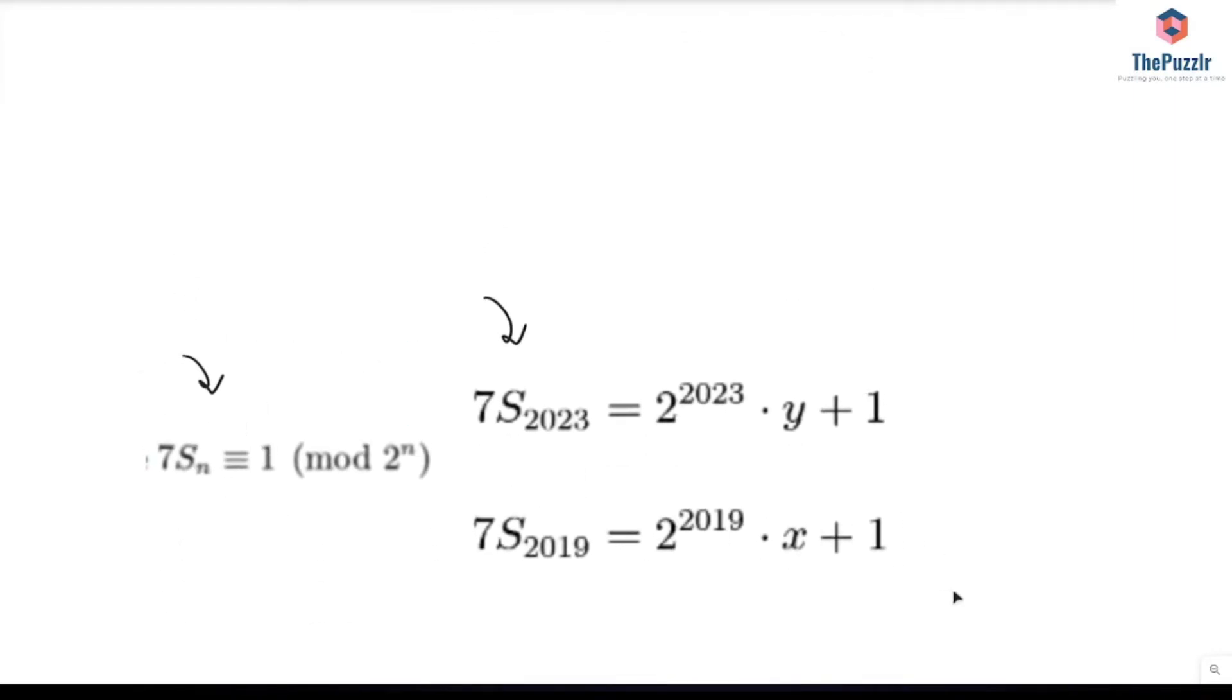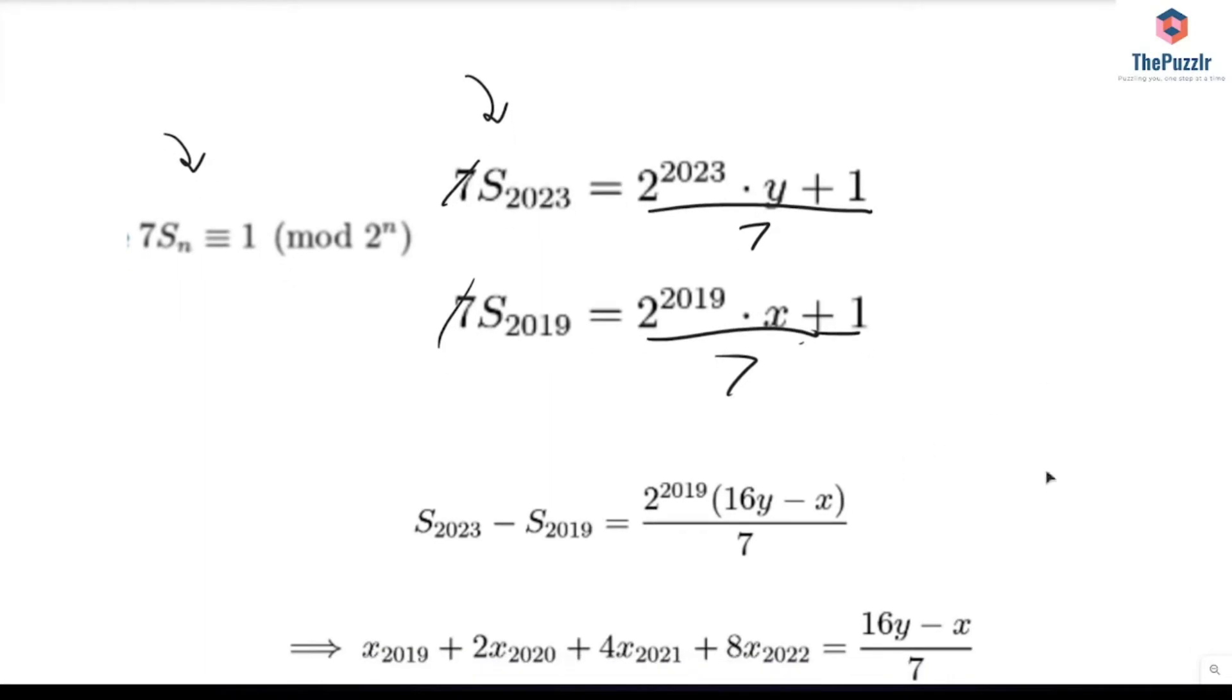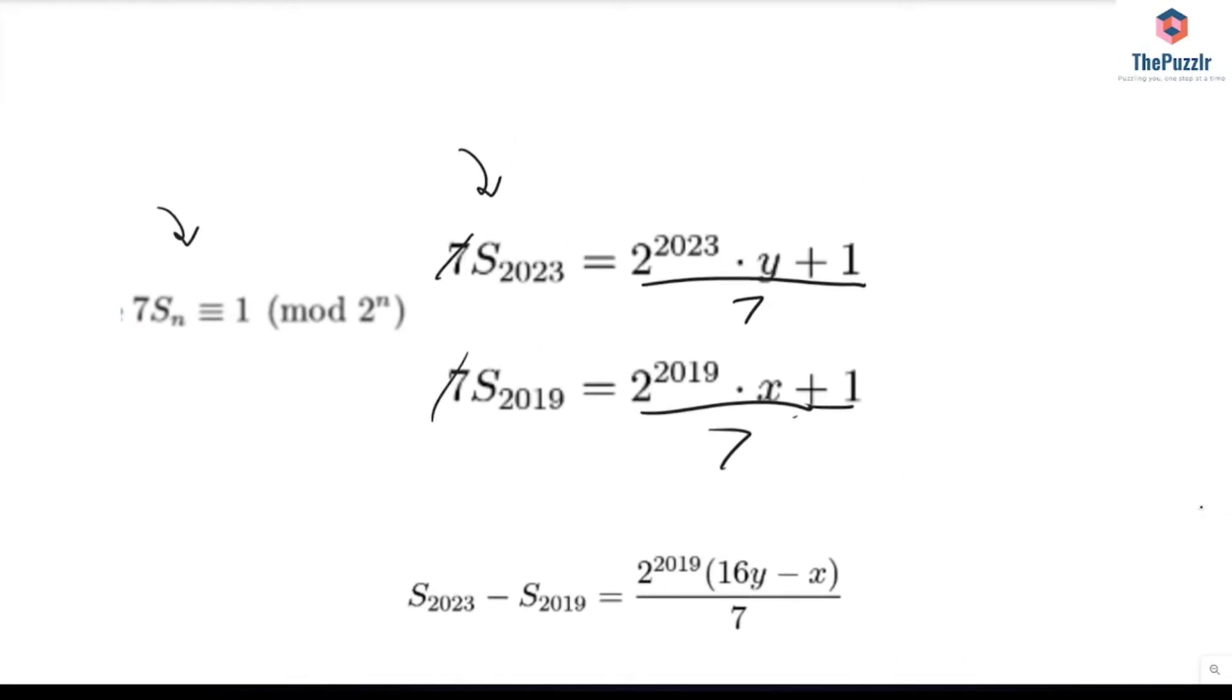Now that we have this, we have two expressions for S of 2023 and S of 2019 because we can take this and divide both sides by 7. If we take the difference between them, S of 2023 minus S of 2019, that's going to give us 2 to the power of 2019 times 16y minus x over 7, because we can write 2 to the power of 2023 as 2 to the power of 2019 times 2 to the power of 4.